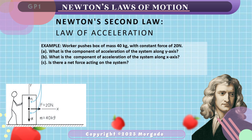Let's have this scenario: a worker pushes a box of mass 40 kilograms with a constant force of 20 newtons. The first question asks for the component of acceleration along the y-axis. Looking at the free body diagram, the system has three forces: the normal force upward, the weight or gravitational force downward, and the horizontal applied force of 20 newtons. Taking the summation of forces along y, the normal force is cancelled by the gravitational force. Therefore, the summation of forces in the y-axis is zero, so the acceleration along the y-axis must also be zero.